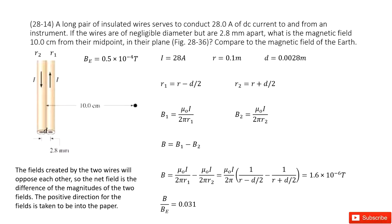There you can see we have two long wires. We can see the R1 and R2, the distance from the wire to the given point. This point is very interested about the magnetic field by these two wires.